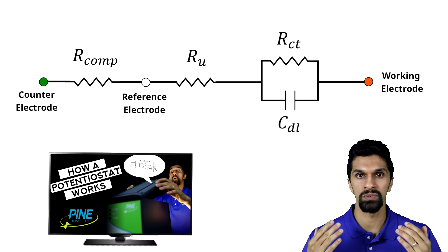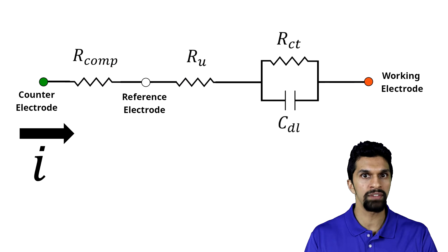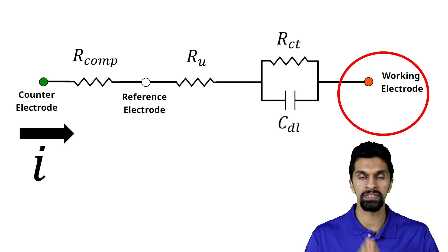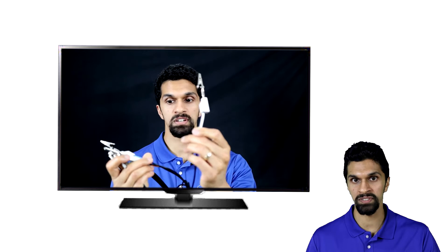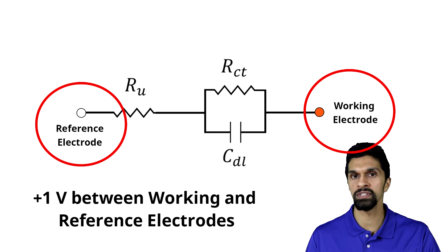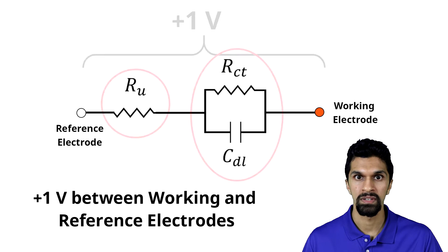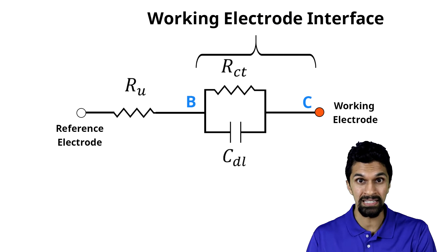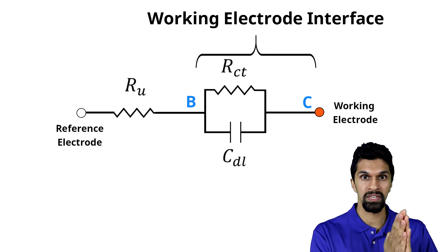If you remember from our how a potentiostat works video, if I apply plus one volt between the working and reference electrode, my potentiostat is driving current between the counter and the working electrode until the potential difference between the working and reference electrode is plus one volt. If I apply plus one volt between the reference and the working electrode, I can break that plus one volt across the circuit elements of our Randles circuit. Part of the potential is across the electrode interface, between points B and C in this circuit diagram, and part of the potential is across the solution resistance, between points A and B.